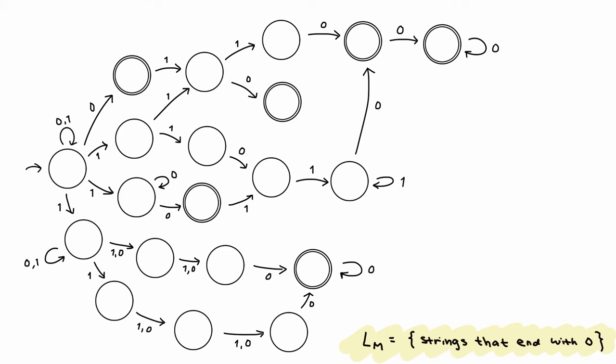So on an example input 100, it could take this path or this path and accept the string, or it could take this path and reject the string. However, it doesn't matter which path the NFA decides to take. As long as there exists one path that causes the machine to end in an accept state, then we say the NFA accepts the string.